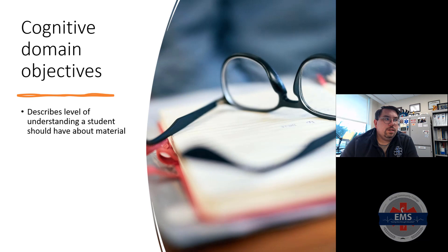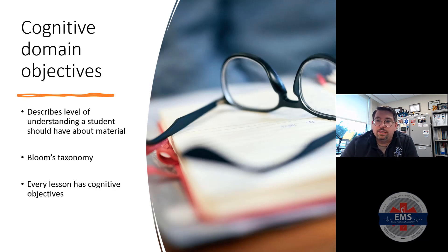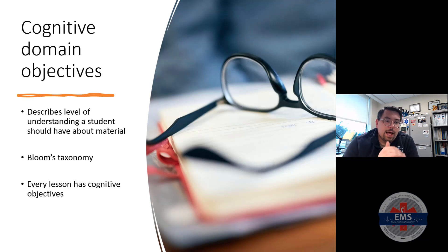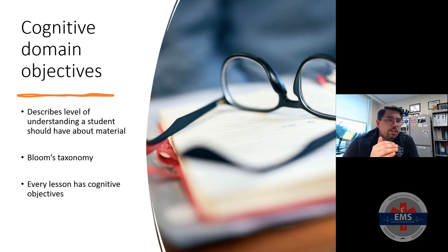The cognitive domain describes the levels of understanding that the student should have about the material. We reference Bloom's Taxonomy because every lesson is going to have some level of cognitive objectives — knowledge, comprehension, application, evaluation, synthesis, and so on. Those become extremely important. When it comes to psychomotor domain objectives, these include gross body movements, fine motor movements, speech behaviors, and nonverbal communication. Sometimes we include those in certain lessons and sometimes we don't. Generally, if you're using a lab and a lecture, you'll focus on cognitive aspects first, then move into psychomotor.